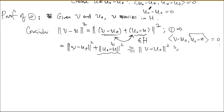Therefore ||V - U₀|| ≤ ||V - U|| for every U in H, which means U₀ is the minimum distance element. This is amazing — orthogonality is really the essence of this minimality. You've seen this in Lagrange multipliers in Calc 3: when optimization is happening, the tangent spaces satisfy an orthogonality condition. Orthogonality and optimization are deeply connected.